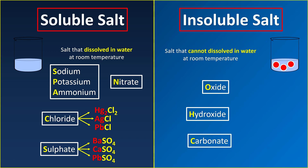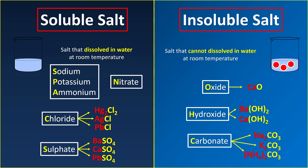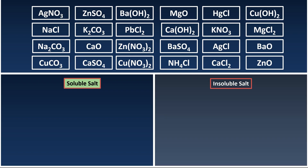For oxide, all are insoluble except calcium — 'my only children, Ca.' For hydroxide, it's 'her chicken burger' or HSBC Bank — Ba and Ca are exceptions. For carbonate, all are insoluble except 'spark' — sodium, potassium, and ammonium. Now we're going to do some practice, because practice makes perfect and we learn by doing. Pause the video and try it yourself.